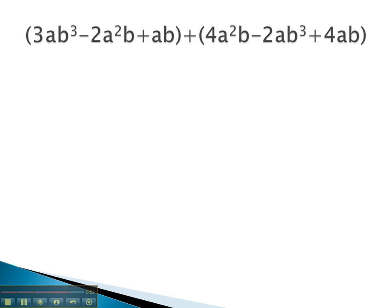So for example, when we look at this next problem, if we're looking for like terms, we'll see the first term on here is a 3ab cubed. There's another ab cubed with the negative 2. 3 and negative 2 gives 1ab cubed, and we don't need to write the 1.